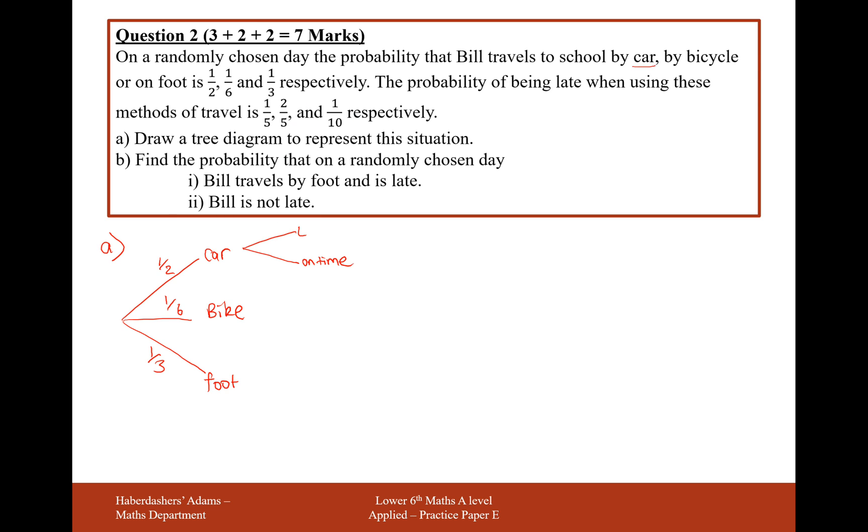So let's match these up. Car is a half, and he's late with the probability of a fifth. So that would be a fifth and four fifths. The probability of him being late or on time by bike is two fifths and three fifths being on time. And the probability of him being late or on time by foot is a tenth by late, and nine tenths he's on time traveling by foot. Okay, so here's the tree diagram representing this information.